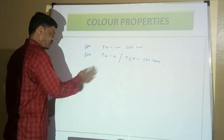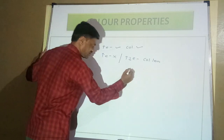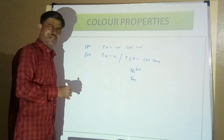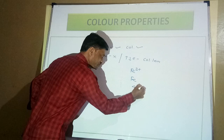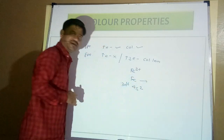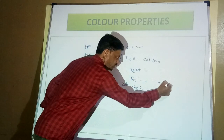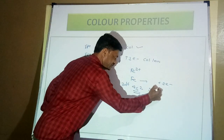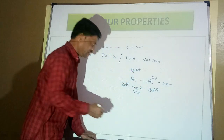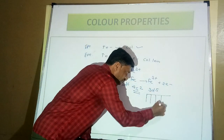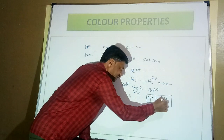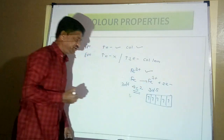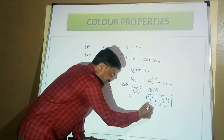Let us explain with examples. Take Fe³⁺. The configuration of Fe (atomic number 26) is Ar 4S² 3D⁶. With a +3 charge, 2 electrons from 4S and 1 electron from 3D are lost. The remaining configuration is 3D⁵. In the block diagram for 3D⁵, there are 5 unpaired electrons. So Fe³⁺ is found to be coloured.